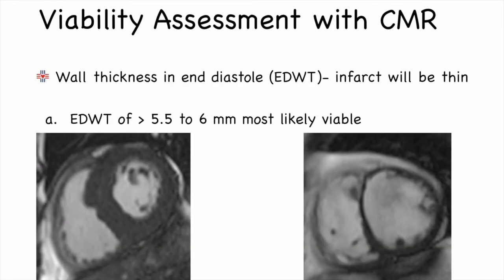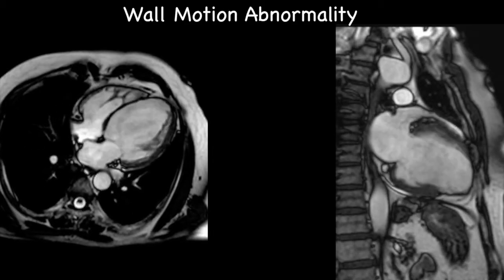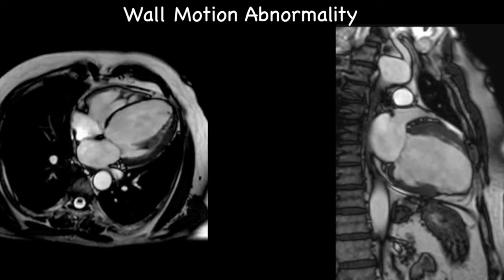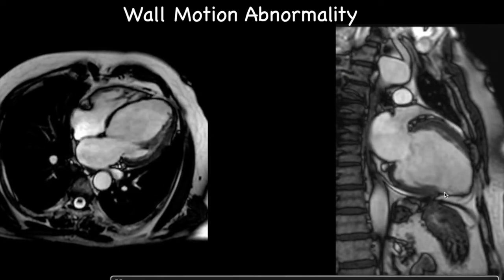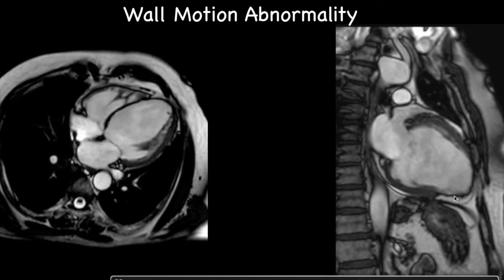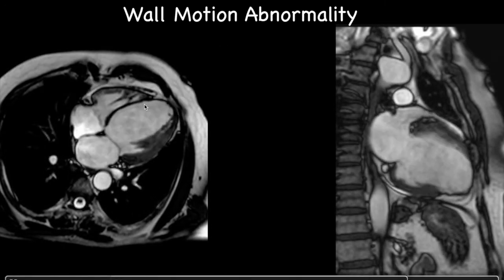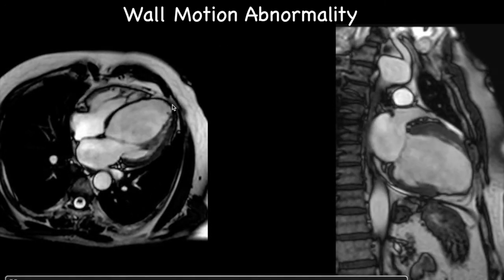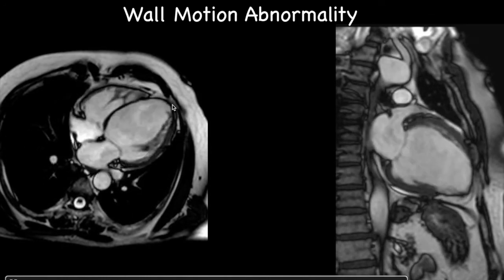When we look at end-diastolic wall thickness, if the end-diastolic wall thickness is 6 mm or greater, the segment is most likely viable. This is a sensitive technique but not very specific. You can see in this image that thinning of the wall is indicative of a likely non-viable segment.